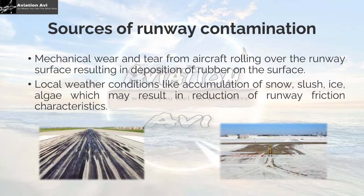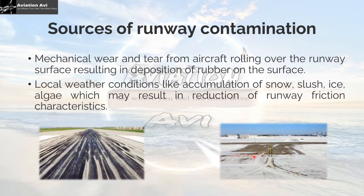Deterioration in the friction coefficient for a given runway surface is termed runway contamination. Sources of runway contamination include: mechanical wear and tear from aircraft rolling over the runway, resulting in deposition of rubber on the surface. As seen in the picture, excessive rubber deposits from continuous landings decrease the friction value and make the surface slippery. Local weather conditions such as accumulation of snow, slush, ice, or algae may also reduce runway friction characteristics. As shown in the picture, the taxiway and associated runway surface is partially filled with snow, slush, or ice, making the runway slippery.